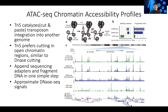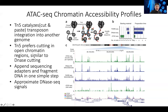ATAC-seq uses an enzyme called Tn5, which viruses use to integrate their transposome or genome into another genome. Some RNA viruses convert their genome to DNA and then incorporate it into the host genome using this type of transposase. Tn5 cuts into the genome and inserts the transposome region into the host genome, and it also prefers to cut and insert near open chromatin regions such as promoters and enhancers.